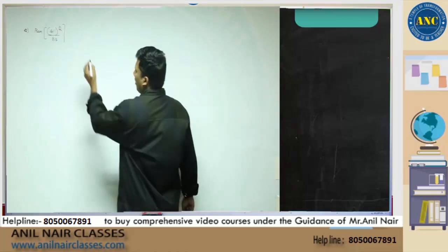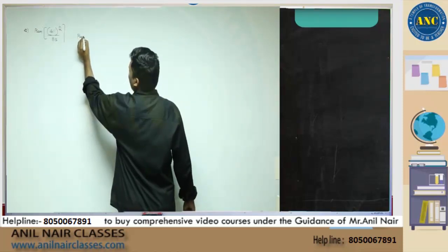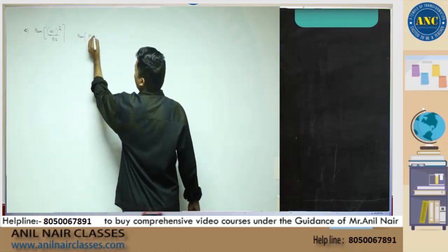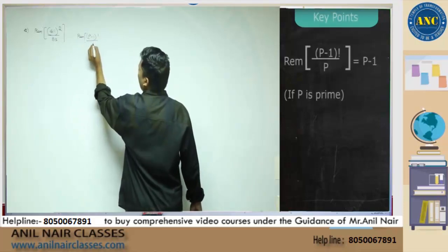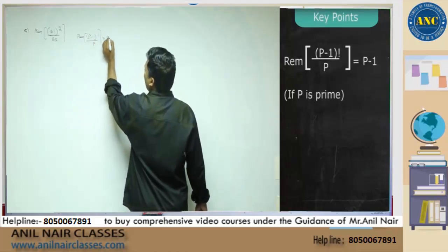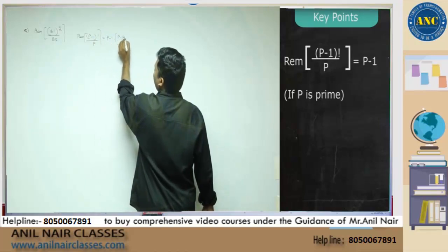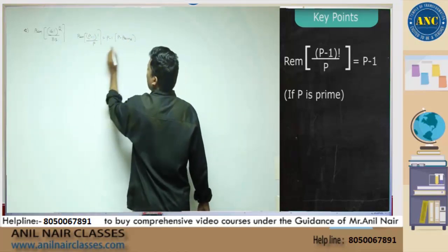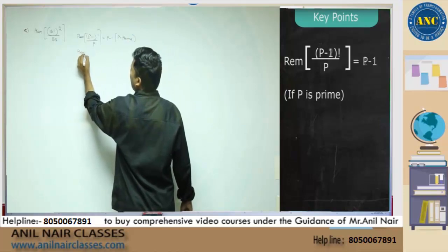Now, before solving this problem, let us take some important properties. P minus 1 factorial divided by P is always P minus 1 if P is prime. Just a recap of what we discussed in our class.